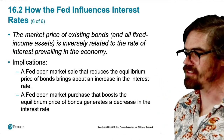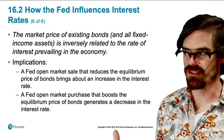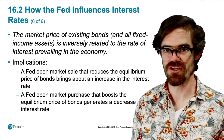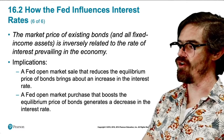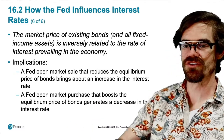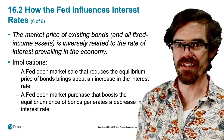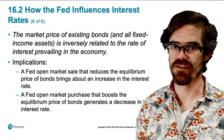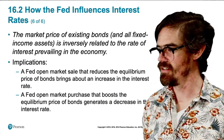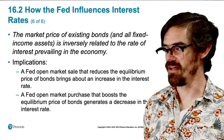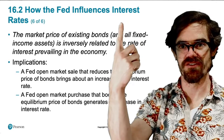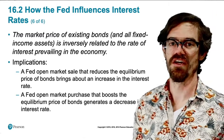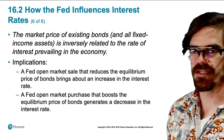The market price of existing bonds is inversely related to the rate of interest in the economy. The implications of this are that when the Fed engages in an open market sale — it goes to the open market and sells bonds — it is increasing the supply of bonds, which drives the price of bonds down, and the price of bonds going down increases the interest rate. And vice versa, when the Fed purchases bonds, the price goes up and interest rates go down. This is how the Fed is able to manipulate interest rates through open market operations — buying and selling bonds.